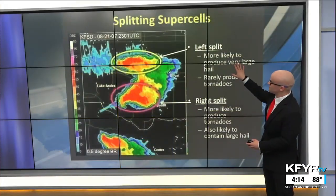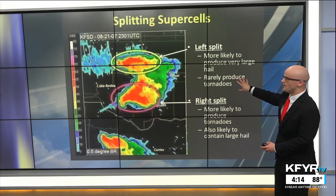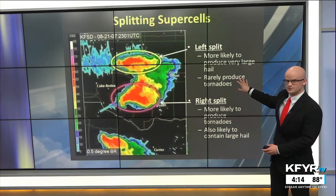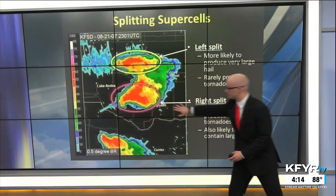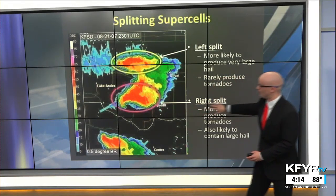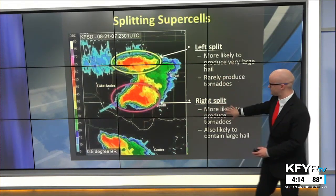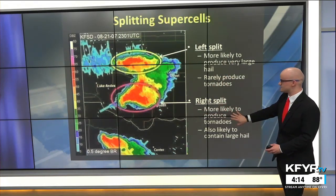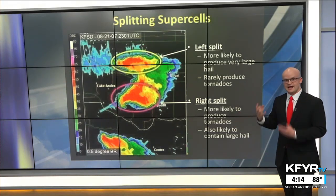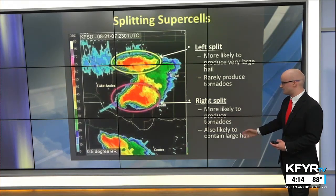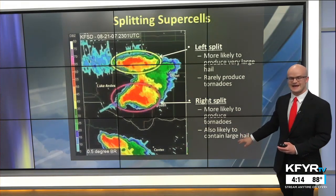The left mover — the left split — is more likely to produce very large hail but rarely produces tornadoes. The right mover, which typically goes more easterly, is more likely to produce tornadoes because there's usually more spin and it can get stronger. That right mover is also likely to contain hail.